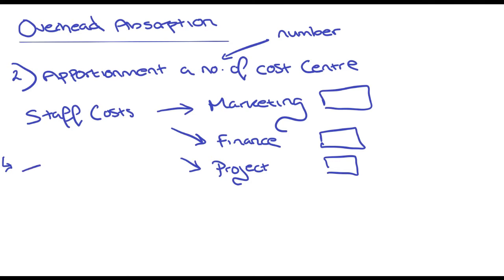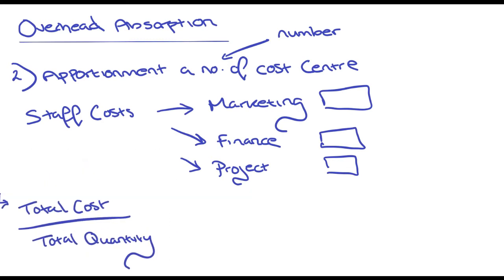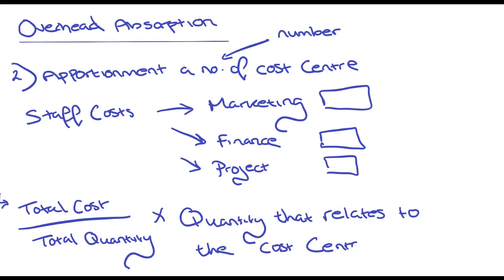Or what you can do is take the total cost divided by the total quantity, and then multiply that by the quantity that relates to each cost centre. So if management knew that 30% of all costs relate to marketing, 10% to finance, and 60% to projects, you just multiply the total by 60% for project work, 10% for finance, and 30% for marketing.